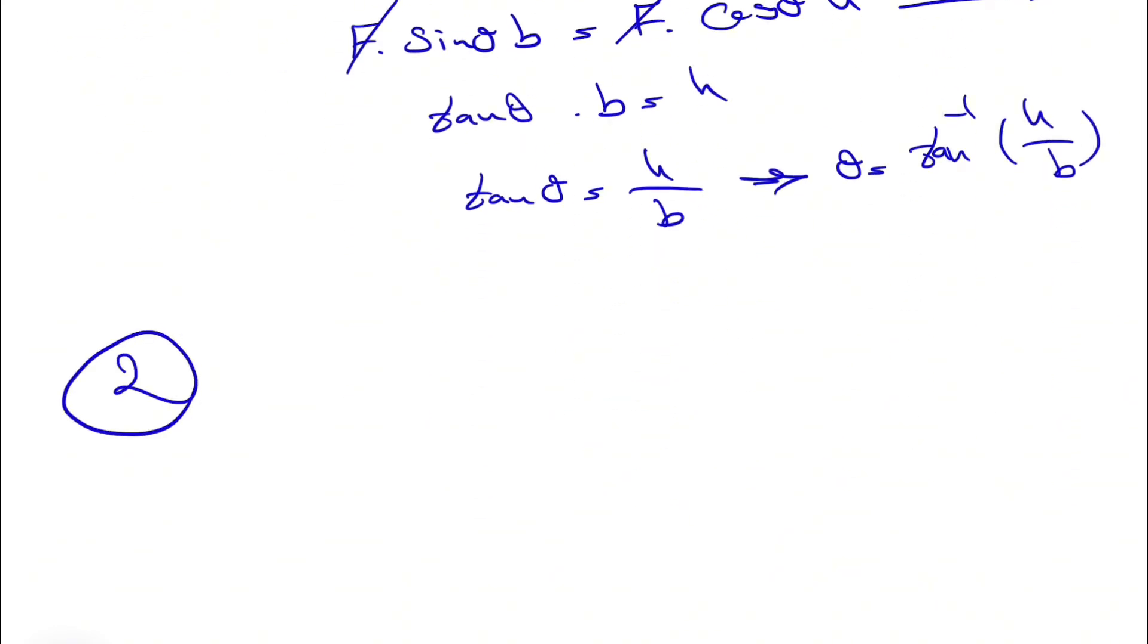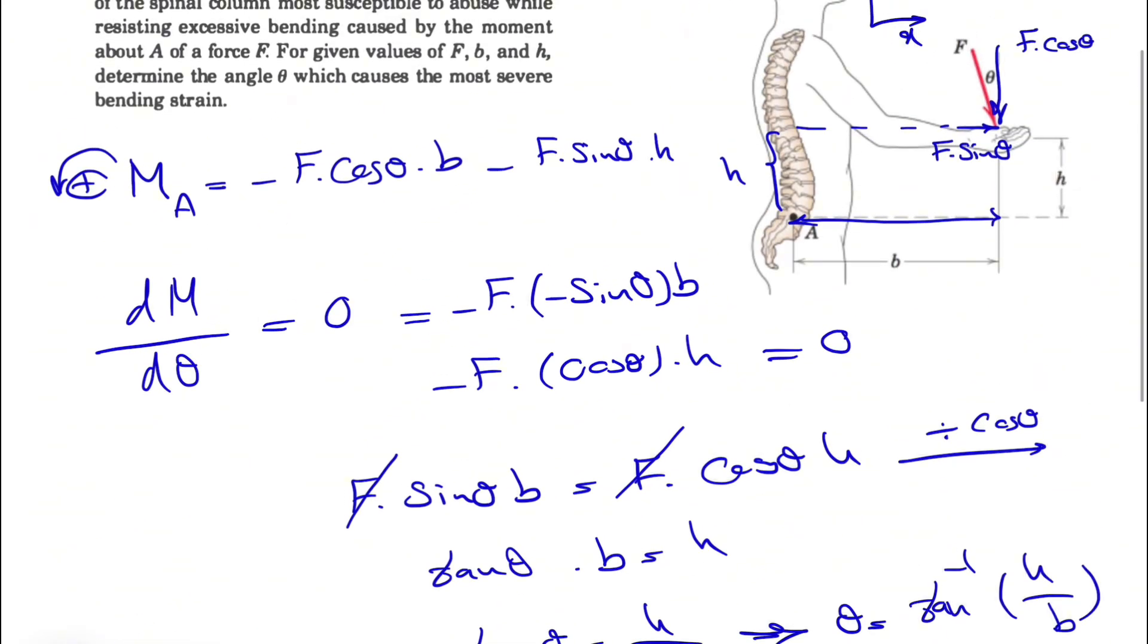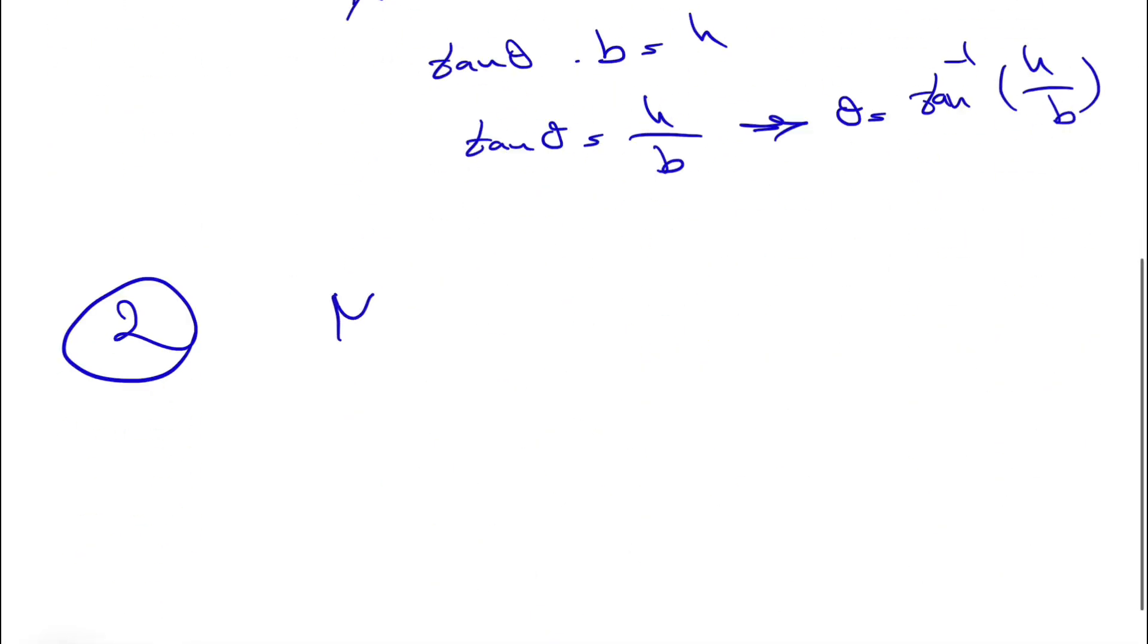The second one, which is the easy one, is we know when we have the maximum moment about point A. From the definition of moment, we have r cross F, which in 2D is pretty much r times F times sine of theta. When we have the sine maximum, the moment will be maximum too.